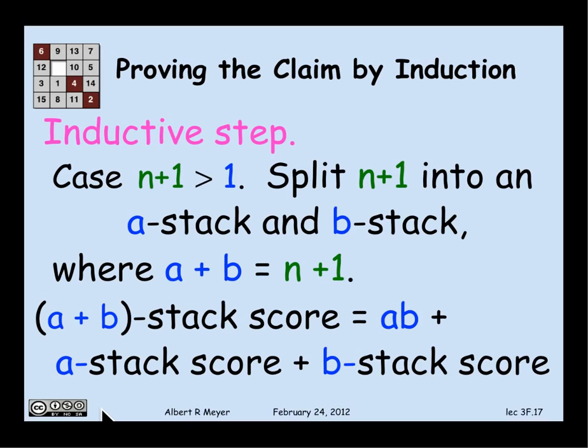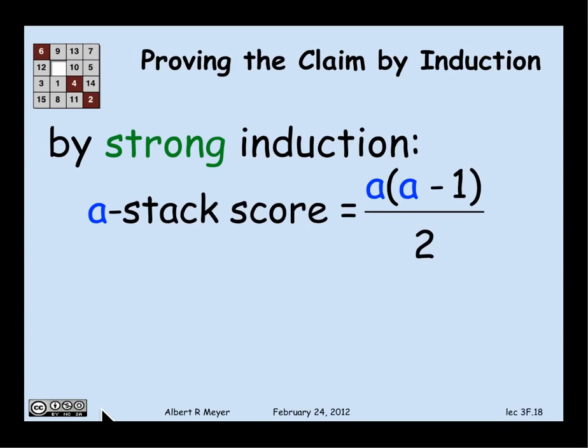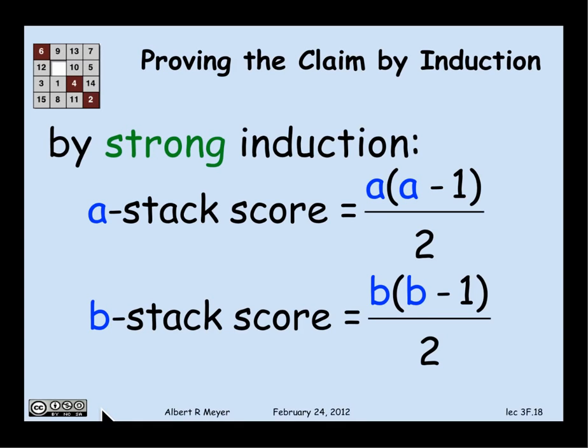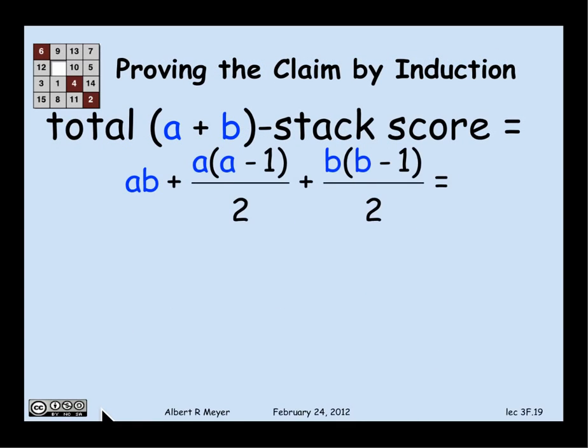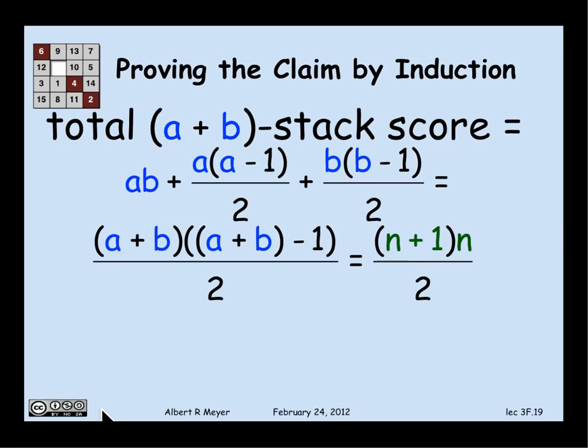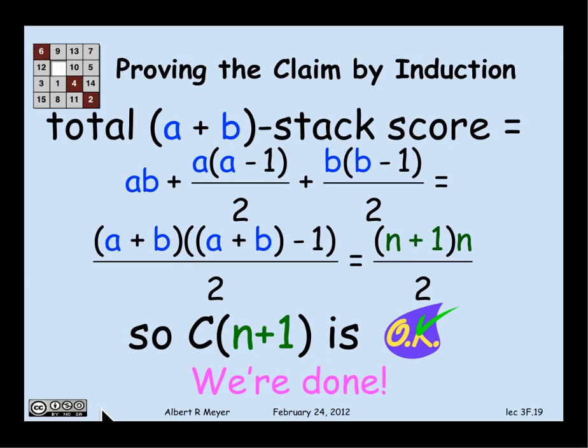But A and B are smaller than N+1. They're less than or equal to N, which means that by strong induction, I know that no matter how I play on the A stack, I'm going to wind up with this score, A times (A-1) over 2. No matter how I play on the B stack, I'm going to wind up with B times (B-1) over 2. So that means that my score on the A+B stack is going to be this formula, AB plus A times (A-1) over 2 plus B times (B-1) over 2. So you simplify that to organize it so it's (A+B) times (A+B-1), which is exactly (N+1) times N over 2, which is what we were trying to prove. We've proved C of N+1.